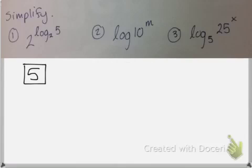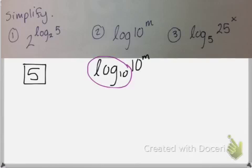Now look at number two. Remember, when you just see log with no base, it's really a common log and it's implied that the base is ten. Well, now I can see that I have a logarithm base ten and an exponential function base ten, which are inverses, so my answer is just whatever is left over, in this case m.